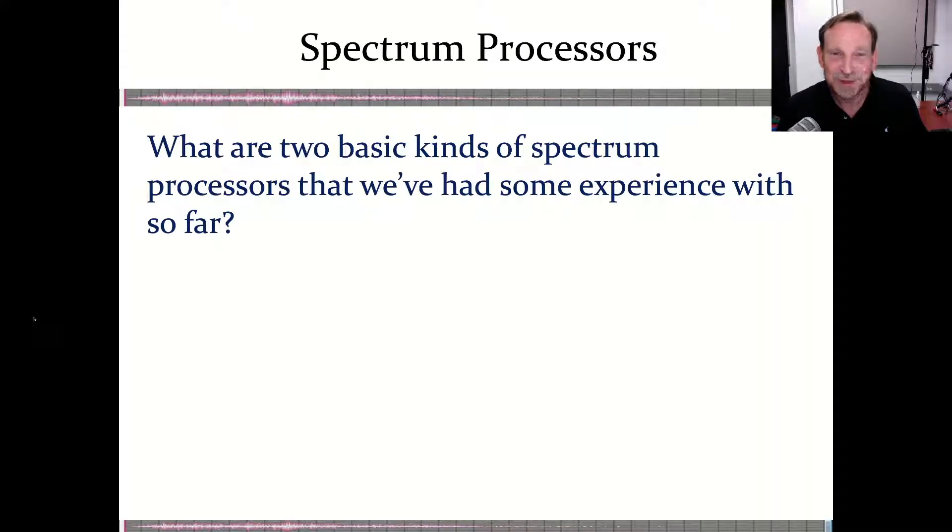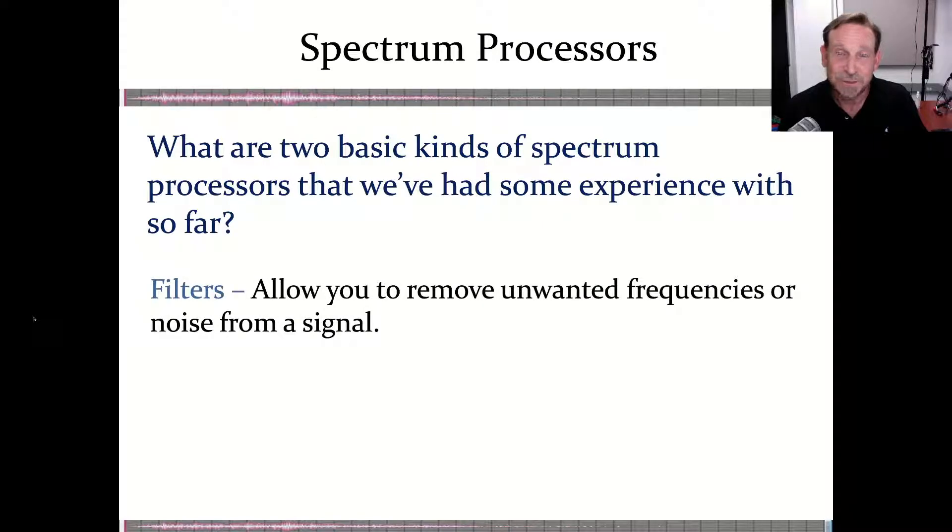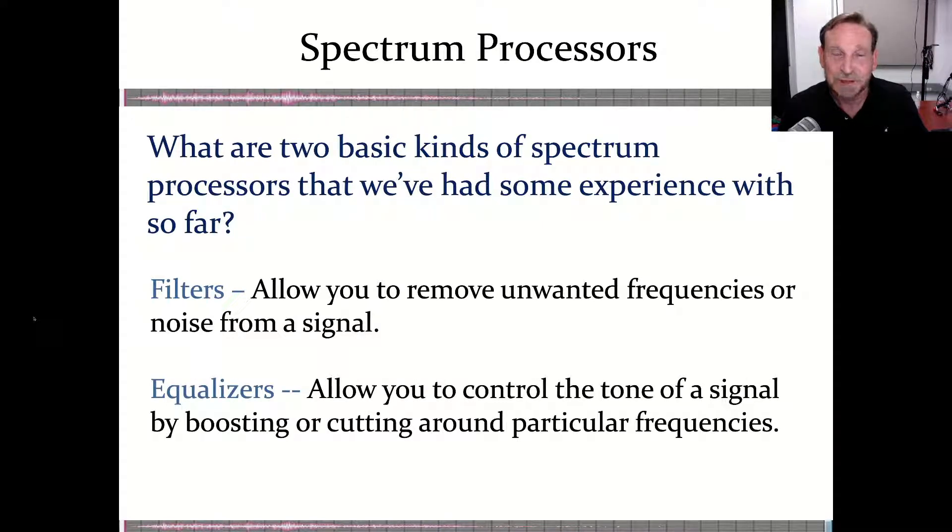So if we think about spectrum processors, that's what we're going to focus on for this particular video. There are two basic kinds of spectrum processors. And we've actually had some experience with them up to this point. They are filters which allow us to cut away signal, and our example that we've been exposed to is the bass roll-off or high-pass filter. There's also equalizers. Equalizers allow us to boost or cut at different points along the frequency spectrum. And we've been exposed to that to some degree through our experience with production consoles.